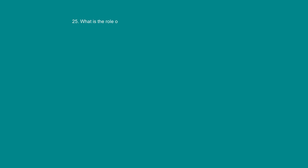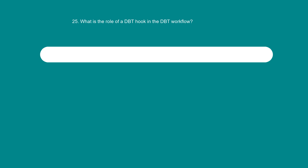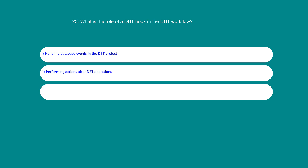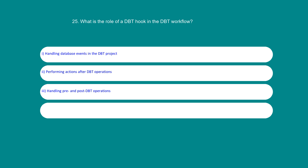What is the role of a dbt hook in the dbt workflow? Option 1: Handling database events in the dbt project. Option 2: Performing actions after dbt operations. Option 3: Handling pre and post dbt operations. Option 4: Handling database connections in the dbt project. The answer is 1: Handling database events in the dbt project.